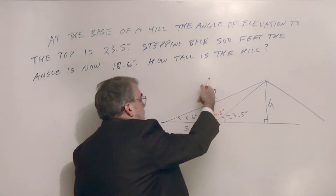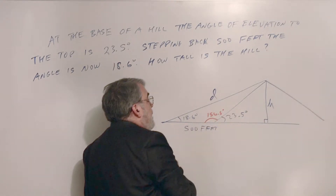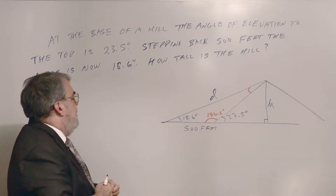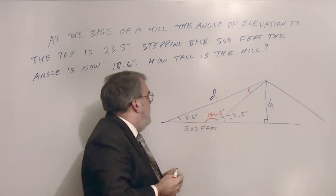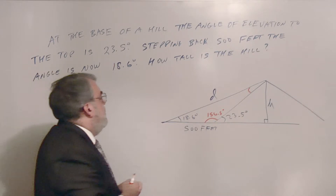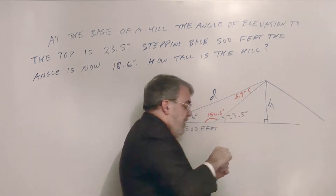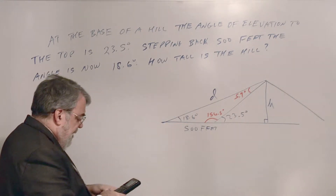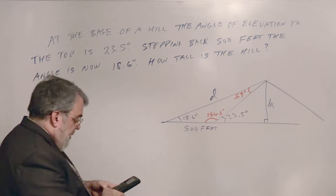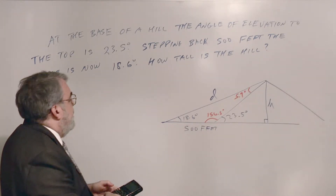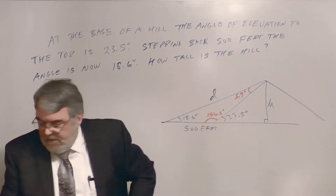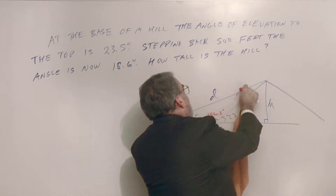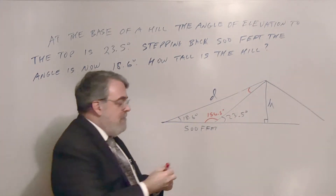I have the distance I'm solving for divided by the sine of the opposite angle, equaling 500 feet over the sine of its opposite angle. I need that small angle — it's probably the difference between the two elevation angles. 23.5 minus 18.6 is 4.9 degrees. Let me verify: 18.6 plus 156.5 plus 4.9 equals 180. Yes, that's correct — my arithmetic was a bit off at first, but 4.9 degrees is right.